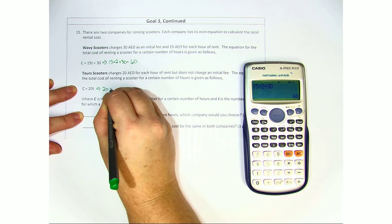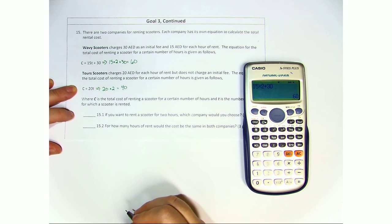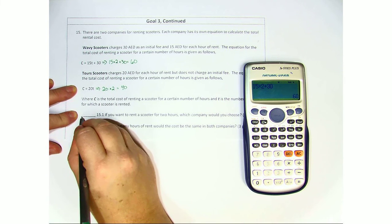This one is 20 times 2, so that's 40 dirhams. I would choose Wavy scooters.